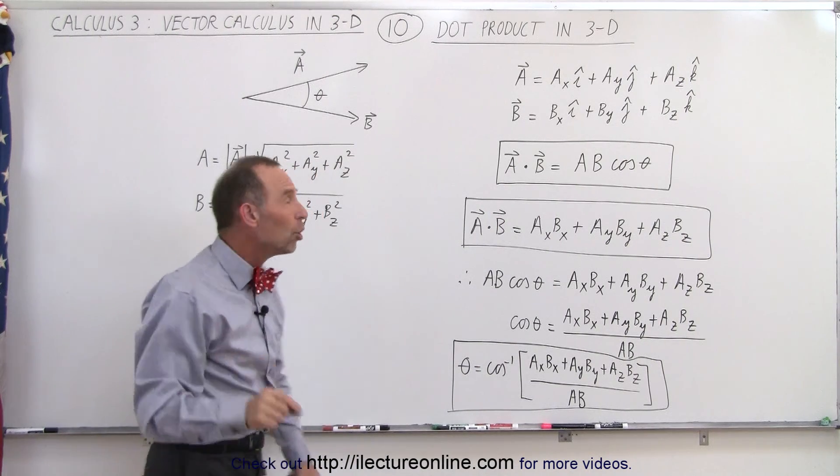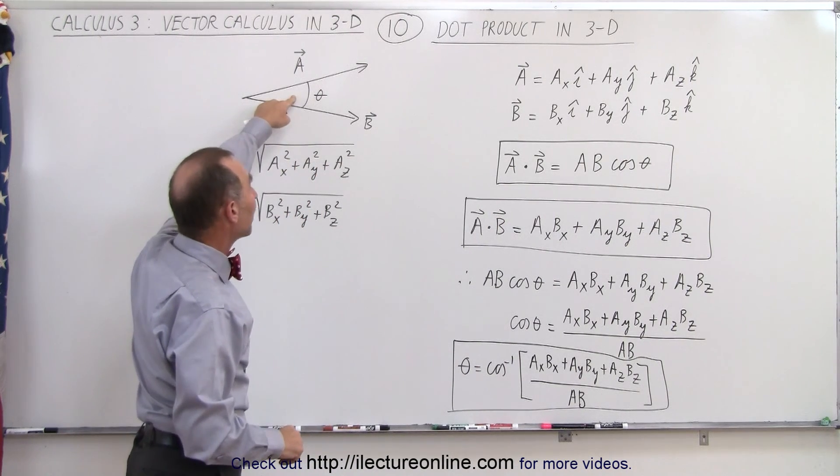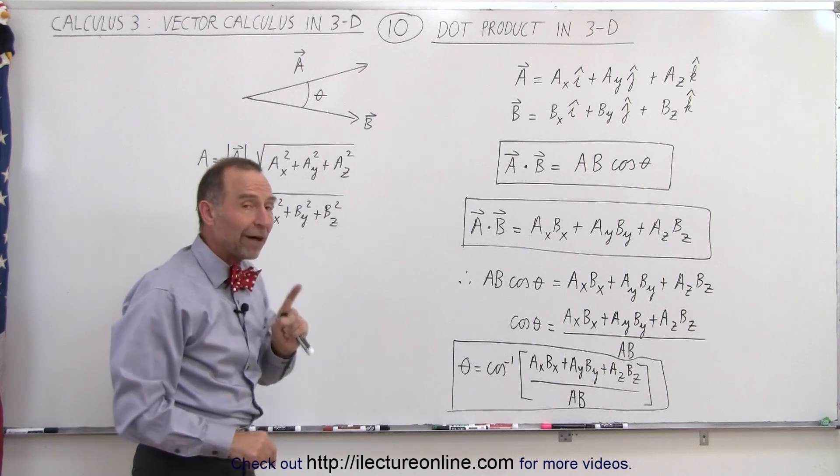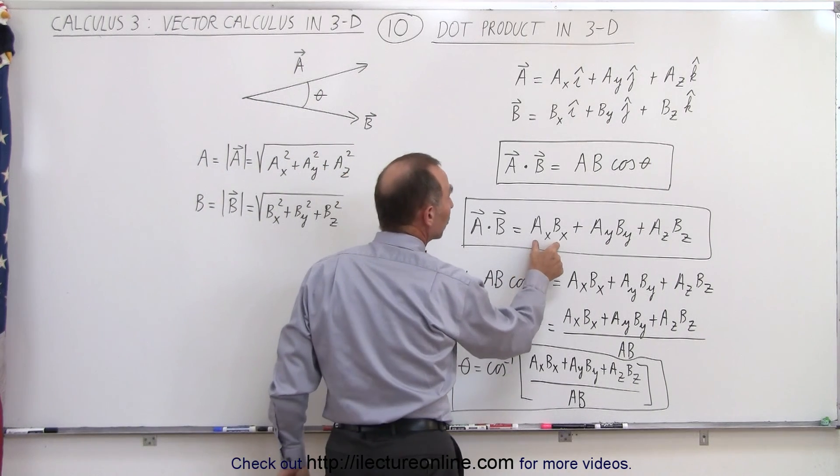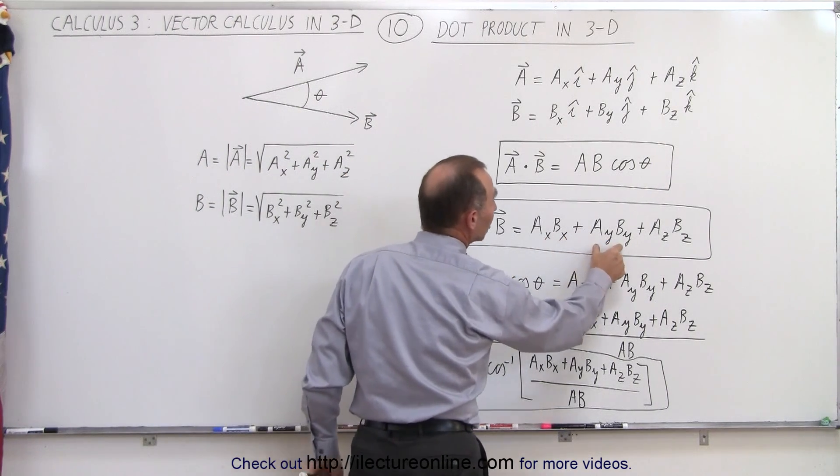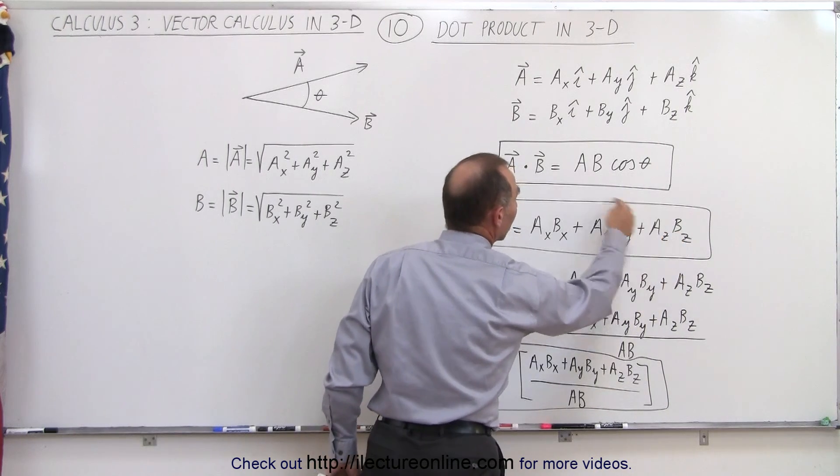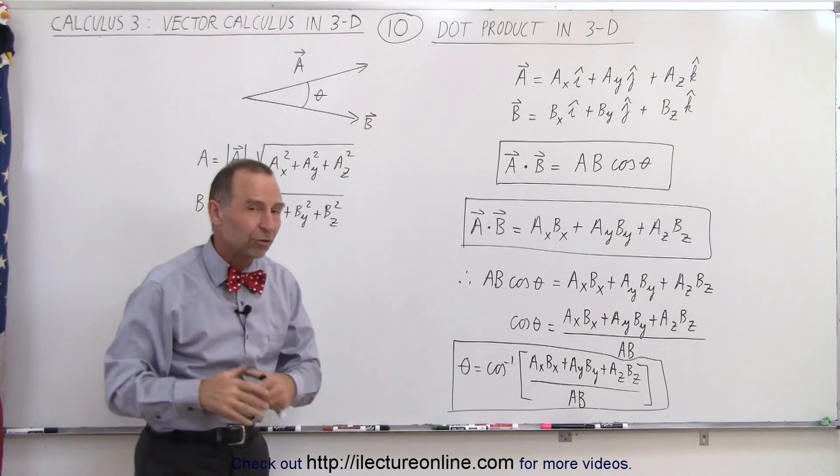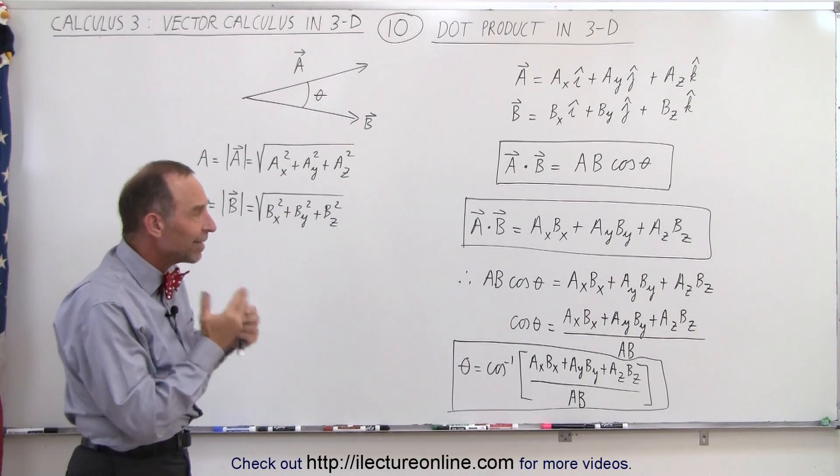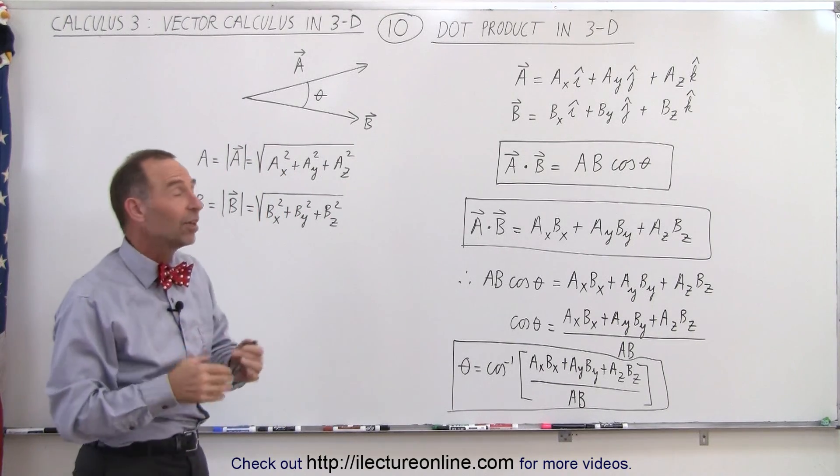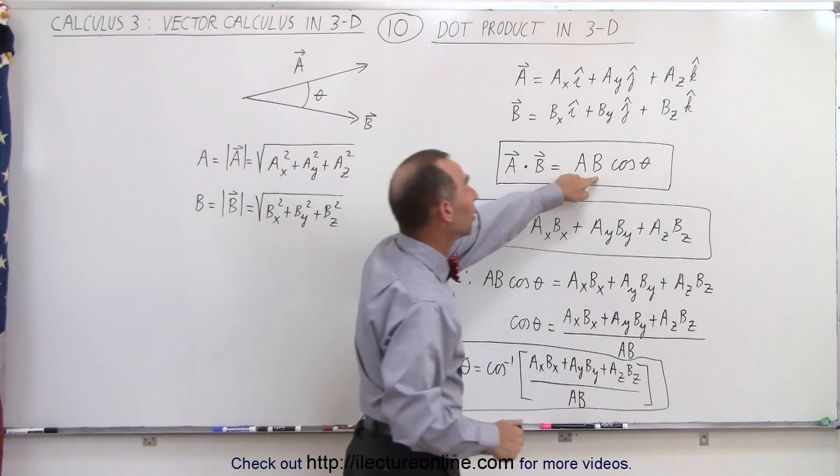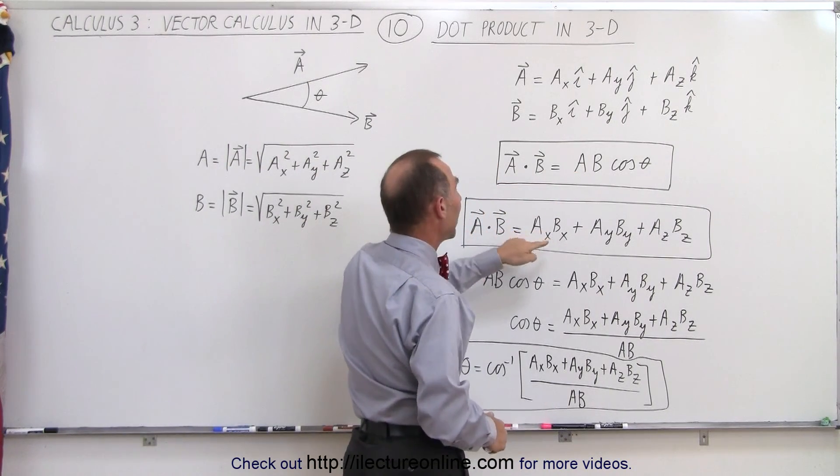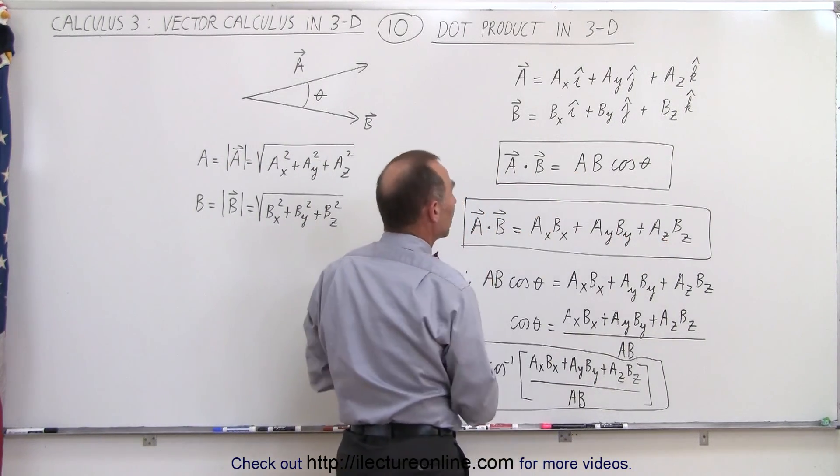If you don't know the angle between the two vectors, you can also find the dot product by multiplying the two x components together, the two y components together, and the two z components together. That will allow you to get the dot product just the same. It will give you the exact same result. Since A dot B is equal to this, and A dot B is equal to that, we can set those two equal to one another.